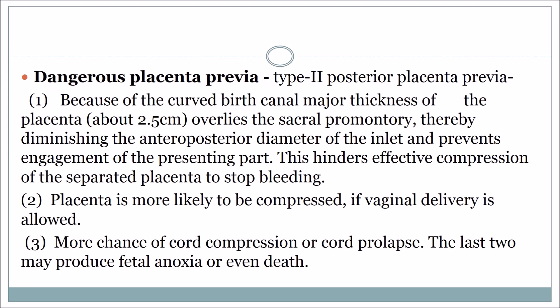Type 2 posterior placenta previa is known as dangerous placenta previa. This is because the curved birth canal overlies about 2.5 cm of the sacral promontory, thereby diminishing the anteroposterior diagonal of the inlet and preventing effective compression of the separated placenta to stop bleeding. There is more chance of cord compression or cord prolapse, and the last two may produce fetal anoxia or even death.